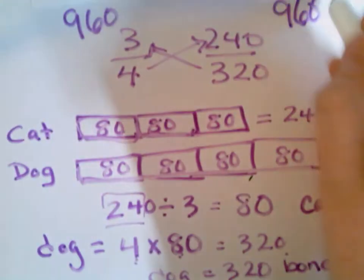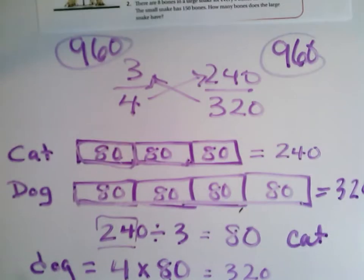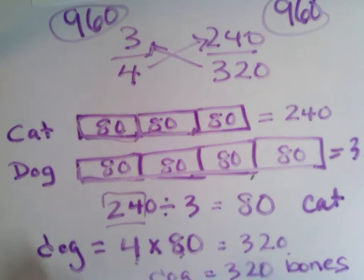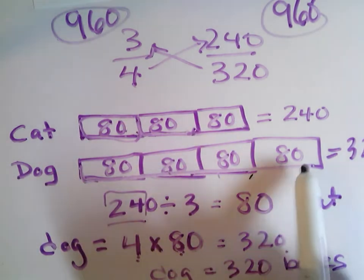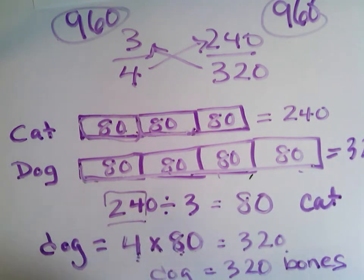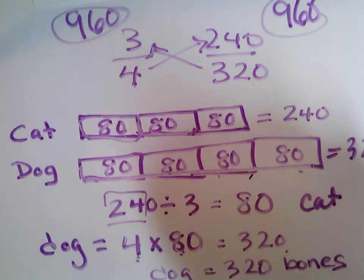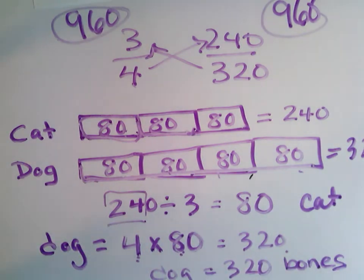960, these are equal. So I can double check to see if they're equal, right? So what I did was I found out the value of each piece and I filled this in and then I multiplied it by four. Let's try another example. Let's try one more example so that you can try some of these on your own today.